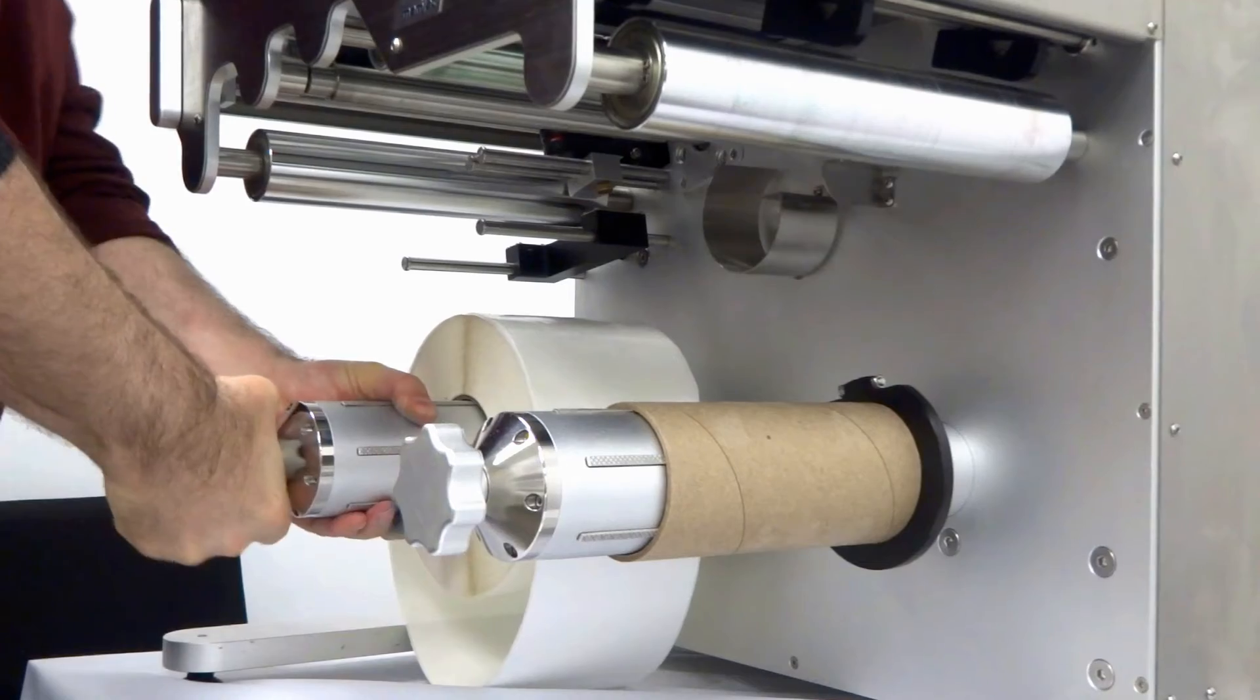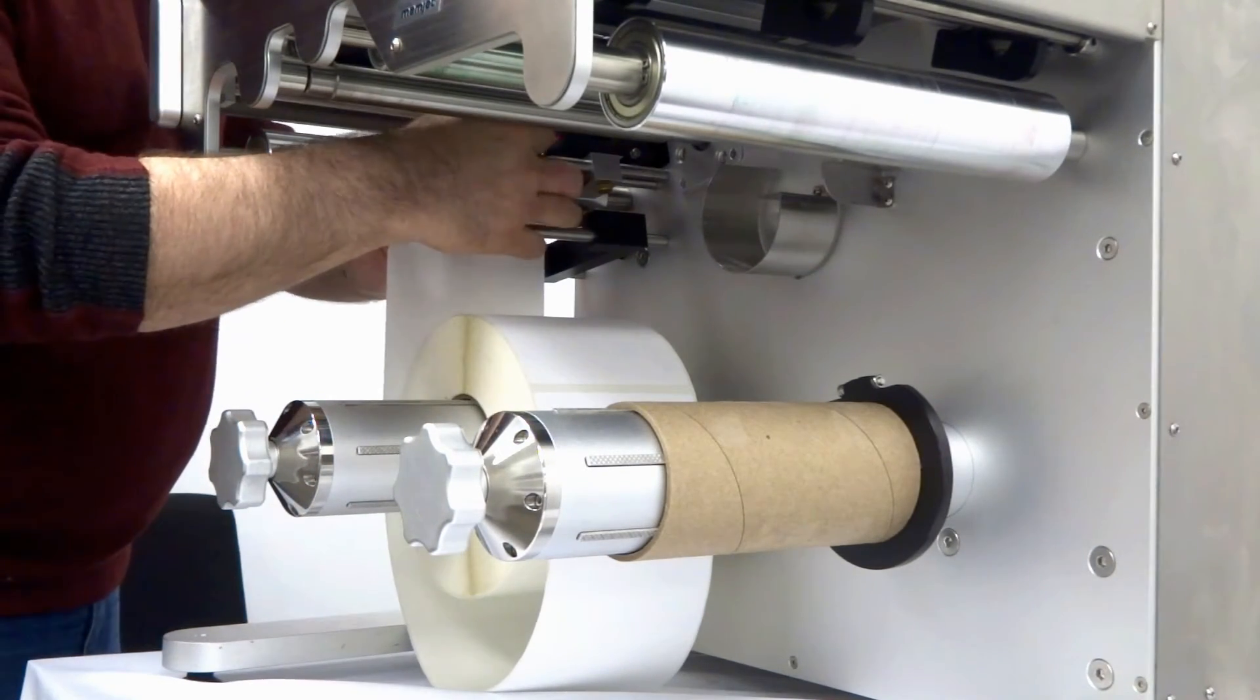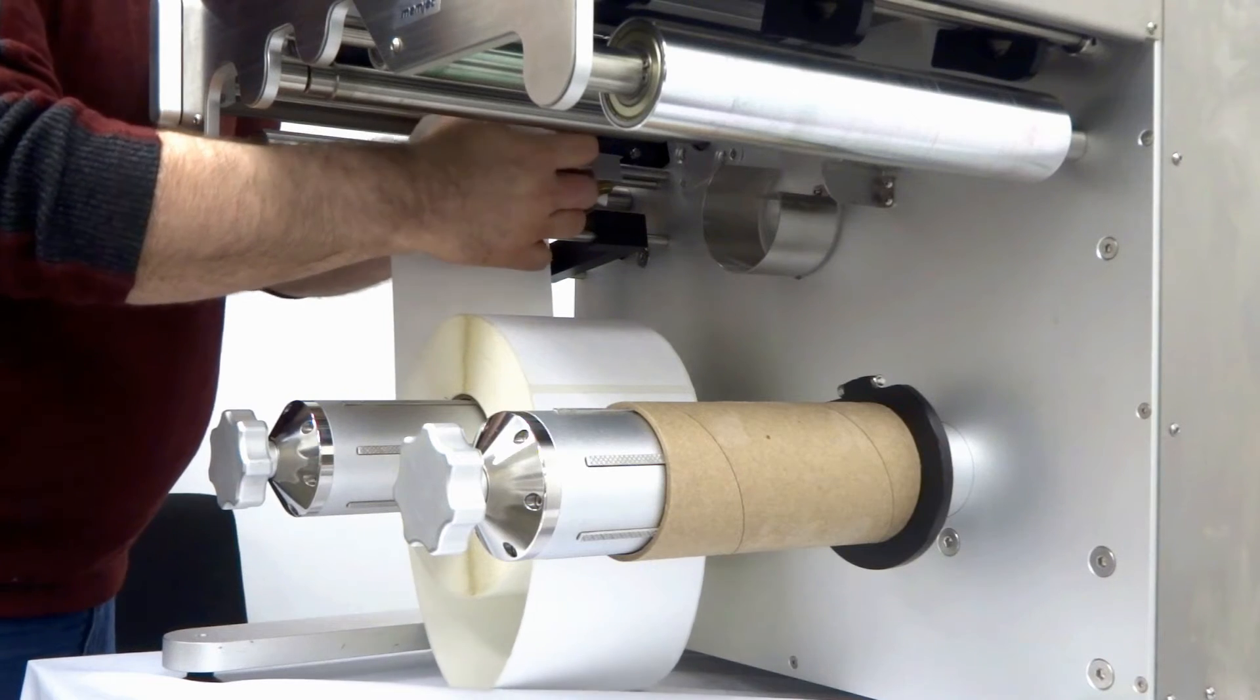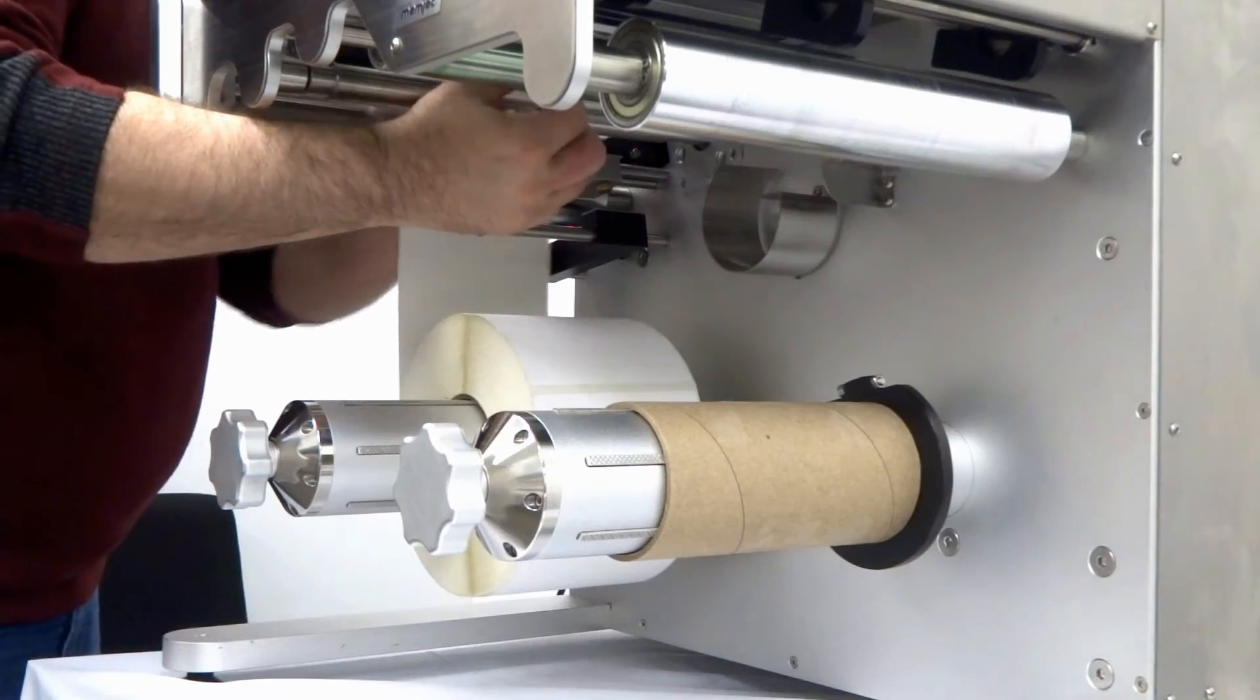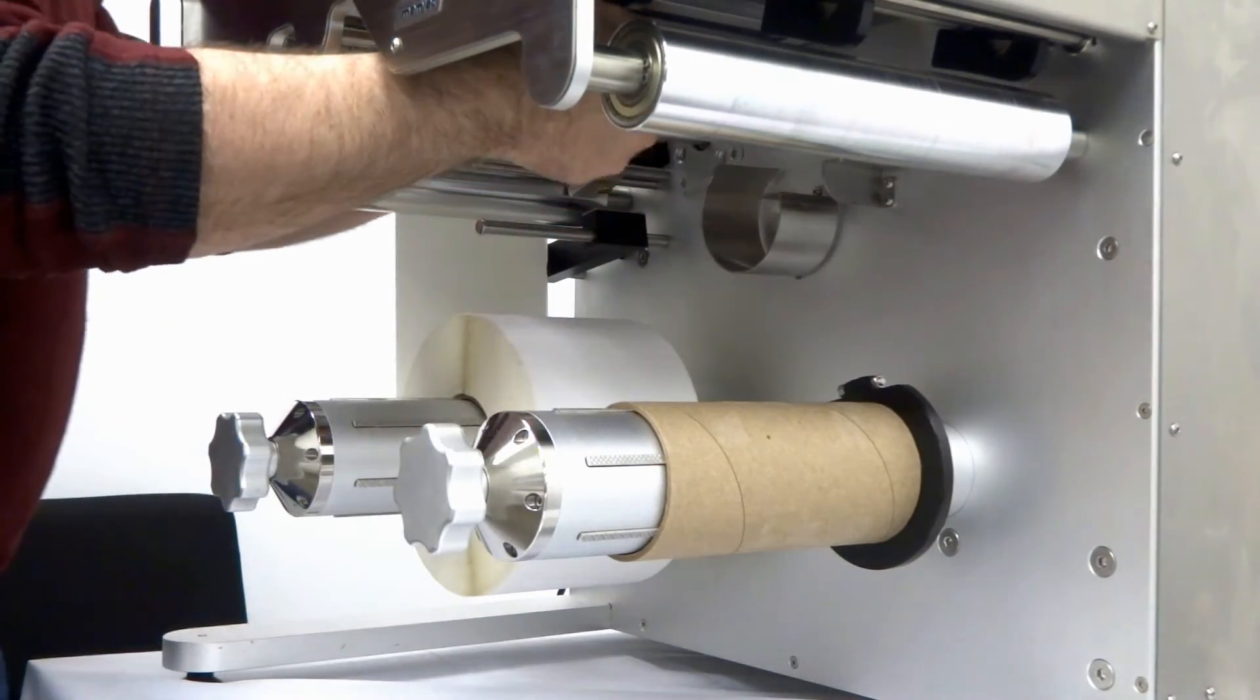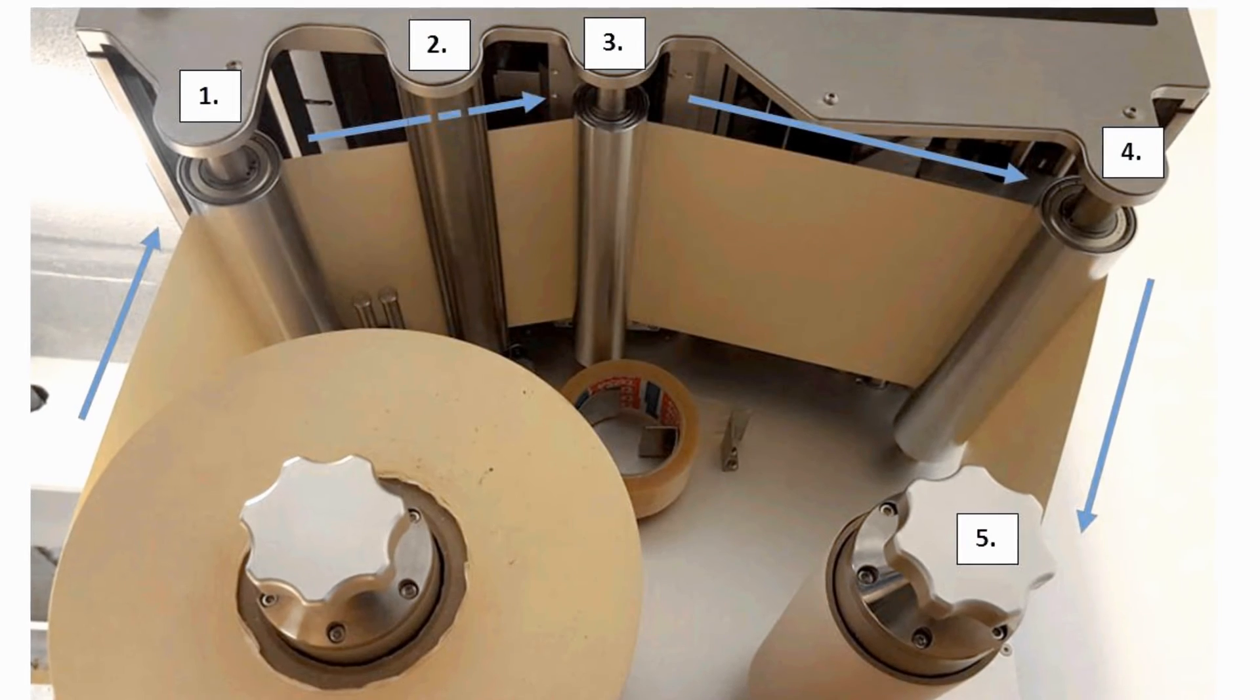Then thread the material up through the edge sensor, through the gap sensor, through the nip roller, over the print nip, over the slit nip, and down to the take-up core.